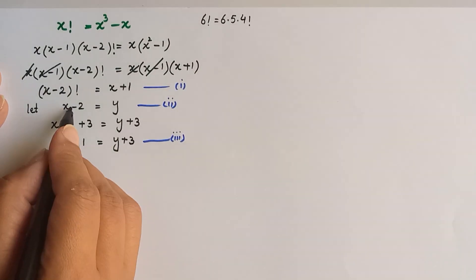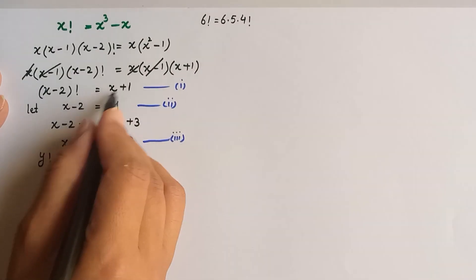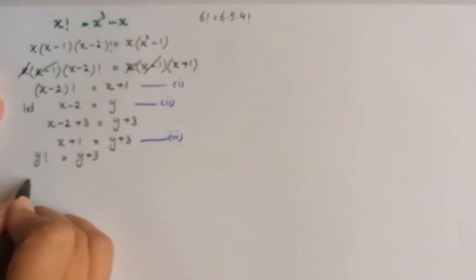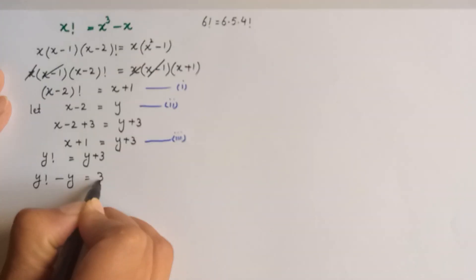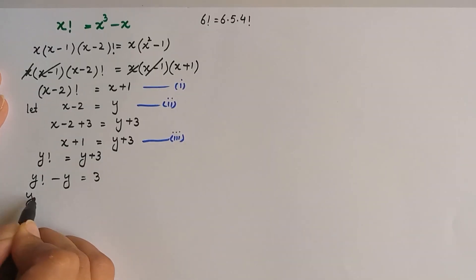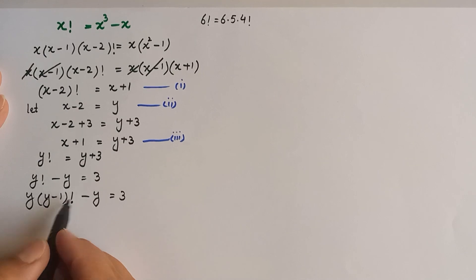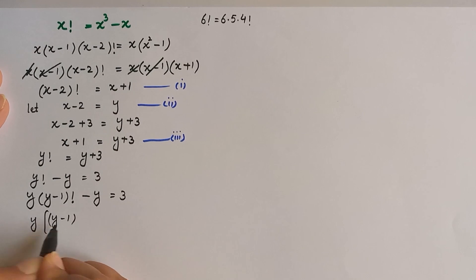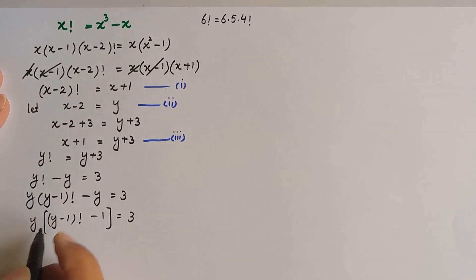Substituting equations 2 and 3 into equation 1: (x minus 2) factorial becomes y factorial, and x plus 1 becomes y plus 3. So y factorial equals y plus 3. Expanding: y times (y minus 1) factorial minus y equals 3, and factoring out y gives y times [(y minus 1) factorial minus 1] equals 3.